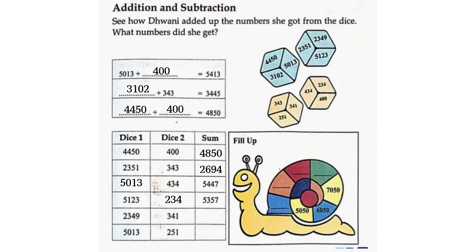5,349 plus 341 is equal to 2,690. 5,013 plus 251 is equal to 5,264. Phillip's pattern: 5,050; 6,050; 7,050; 8,050; 9,050; 10,050; 11,050.